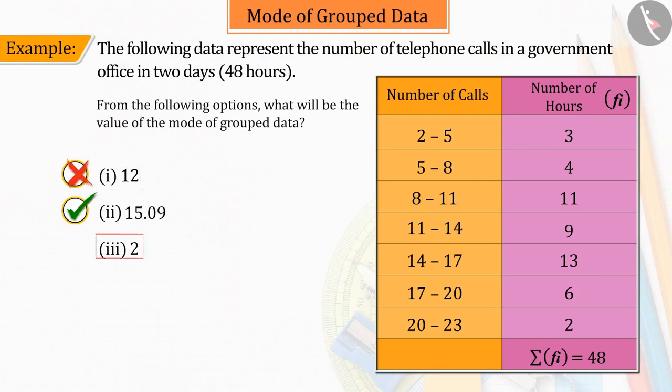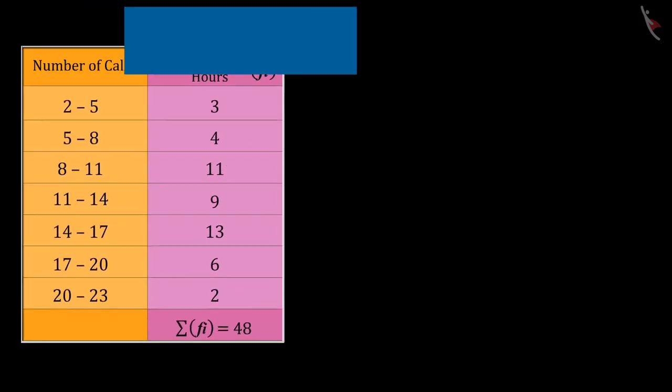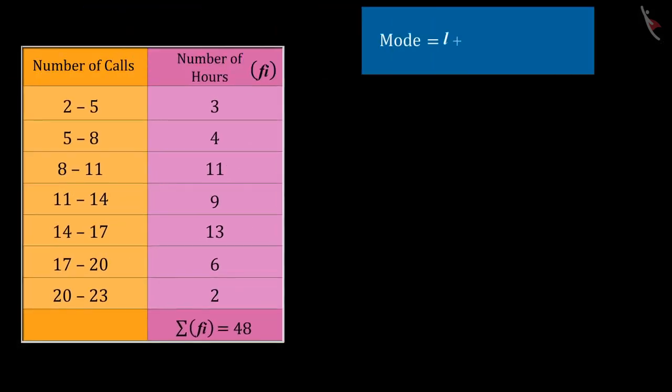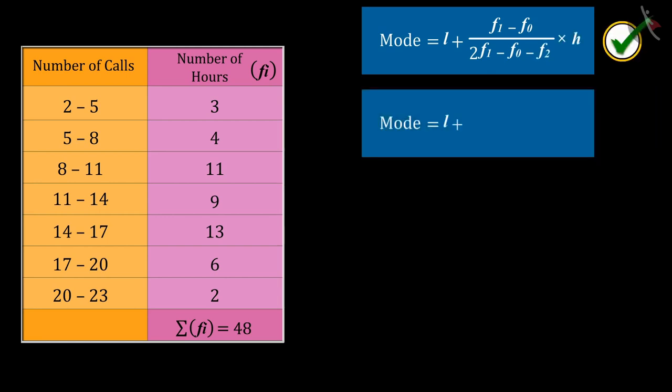If you have selected option 3, then it is also a good try. But, this is the wrong answer. Because, instead of L plus F1 minus F0 upon 2 times F1 minus F0 minus F2 multiplied by H, you substitute L plus F1 minus F0 upon 2 times F0 minus F1 minus F2 multiplied by H and solve on the same basis.